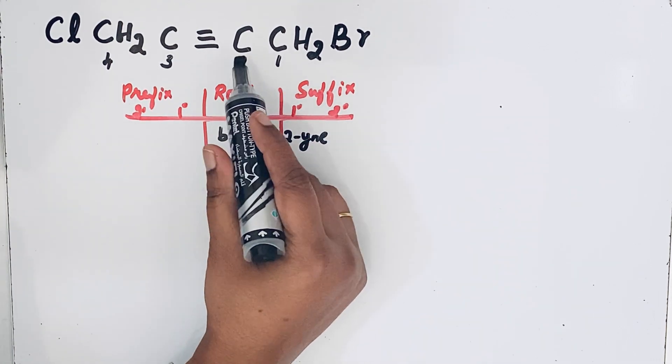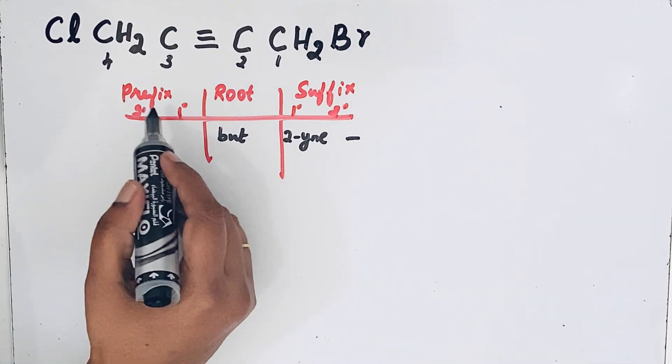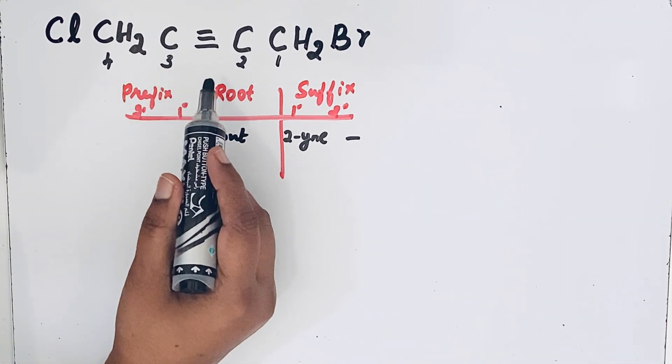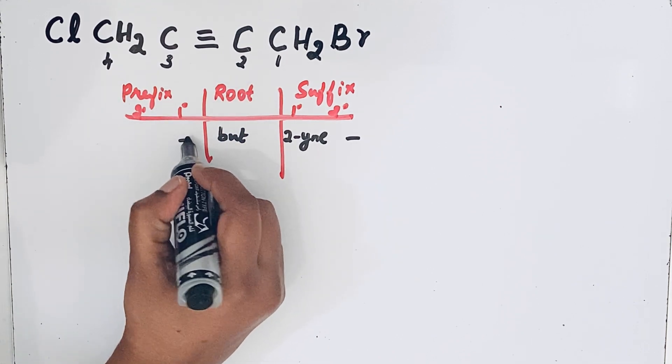For the secondary, there is no functional group, so we can put dash. For the prefix primary, cyclic compound. This is not a cyclic compound, so primary prefix is also absent.